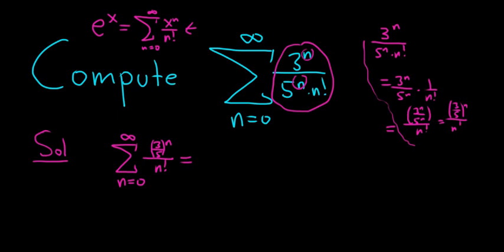So now you see that our x here is 3 fifths. So this is just going to be e to the 3 fifths. And that's the sum of the series.